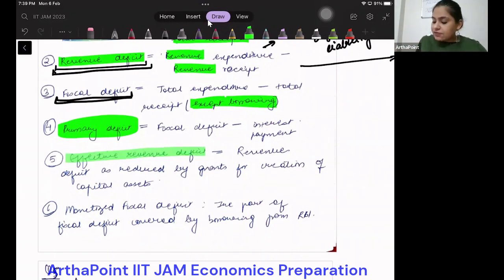The next is effective revenue deficit. What is effective revenue deficit? It is revenue deficit, the same revenue deficit, but minus the grants for creation of capital assets. No asset or liability has been created, so I can think this is my revenue, but it is for that purpose—it is for creating an asset. No asset has been created yet, but that grant is for creation of capital asset. If I subtract that, I will get effective revenue deficit.